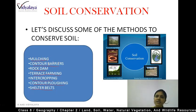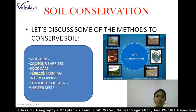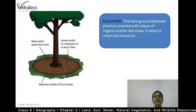In your NCERT book, there is also a description — you should read that. We are going to discuss mulching, then contour barriers, then rock dam, and terrace farming. You should remember all these names. This is very important. If you read it once or twice, you will tend to remember it. So, first of all, let's talk about mulching and see what it is and how it will preserve our soil.